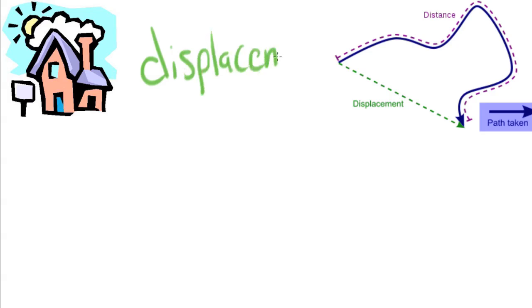Now let's look at the next vocabulary word: displacement. Displacement and distance are often very similar and can be the same thing. Displacement is the shortest distance between a starting point — your reference point — and the end point. For example, if you take your bike along a winding blue bike path to your destination, that path is the total distance. But if you could cut directly across to where you were going, that direct path is displacement.